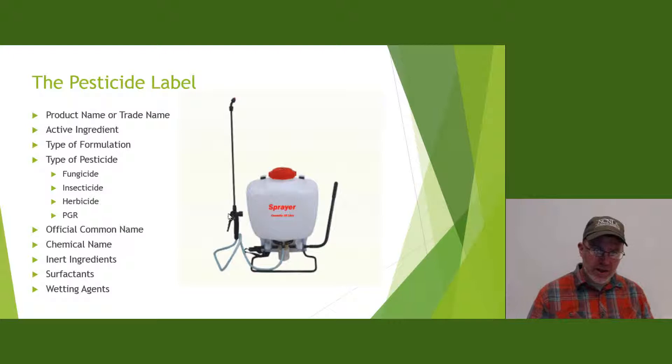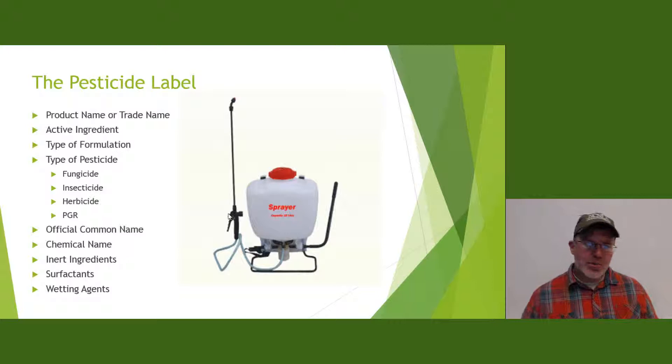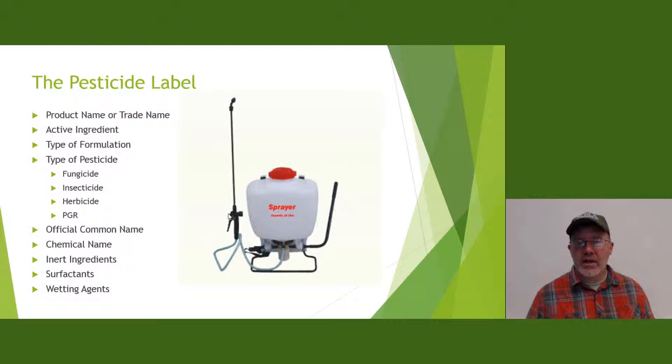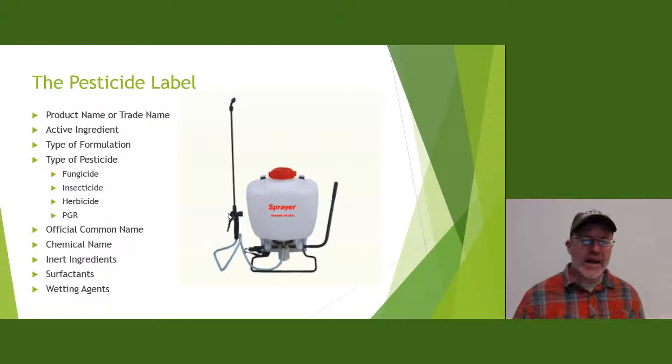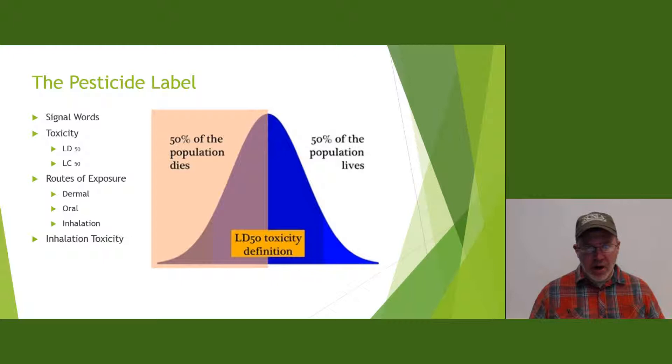Then we have the official common name and the chemical name — the common name for Roundup was glyphosate, the chemical name is that long phosphonomethylglycine. Then our inert ingredients and surfactants — surfactants are like a spreader-sticker that can help the chemical and increase its effectiveness, kind of like an adjuvant — and some wetting agents. We're also going to see our signal words: warning, danger, caution.